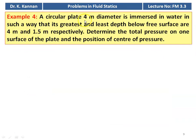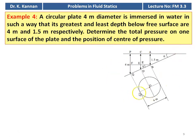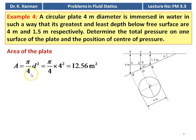Example number 4. A circular plate 4 meter diameter is immersed in water in such a way that its greatest and least depth below the free surface are 4 meter and 1.2 meter respectively. Determine the total pressure on one surface of the plate and the position of the center of pressure. The plate is inclined — greatest depth PQ is 4 meter, least depth AB is 1.5 meter, and the diameter of the disc is 4 meter. Area A equal to pi by 4 d squared, which is pi by 4 into 4 squared equal to 12.56 meter square.